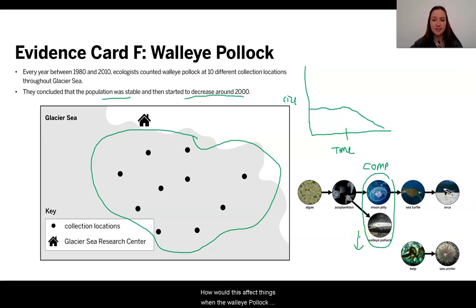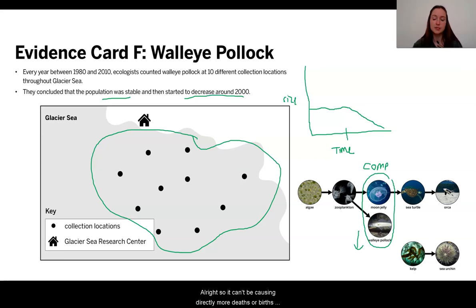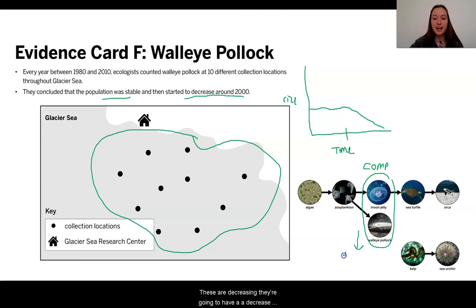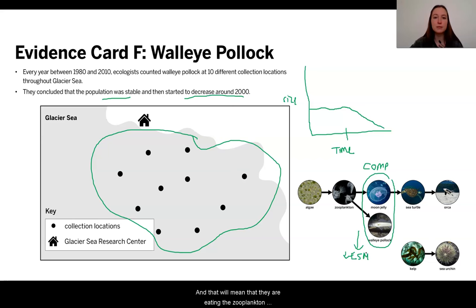Now, how would this affect things? The walleye pollock does not eat the moon jelly, and the moon jelly also does not eat it, so it can't be causing directly more deaths or births. But something interesting is that it is in competition. If the walleye pollock is decreasing in size, how would that be affecting the zooplankton? The walleye pollock is the consumer of the zooplankton, so if they are decreasing, they're going to have a decreased need for energy storage molecules and will be eating the zooplankton far less often.